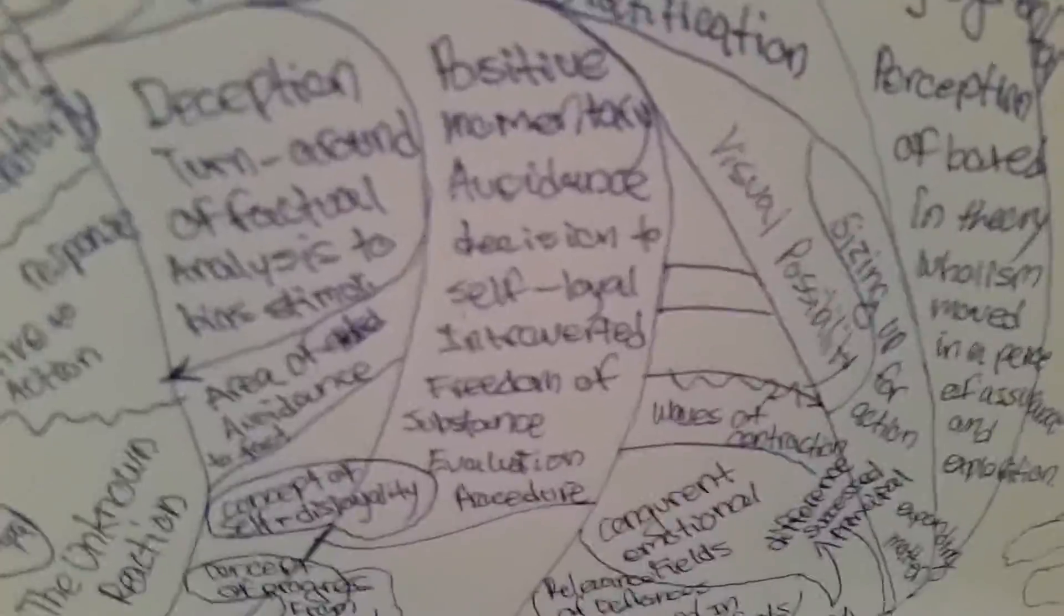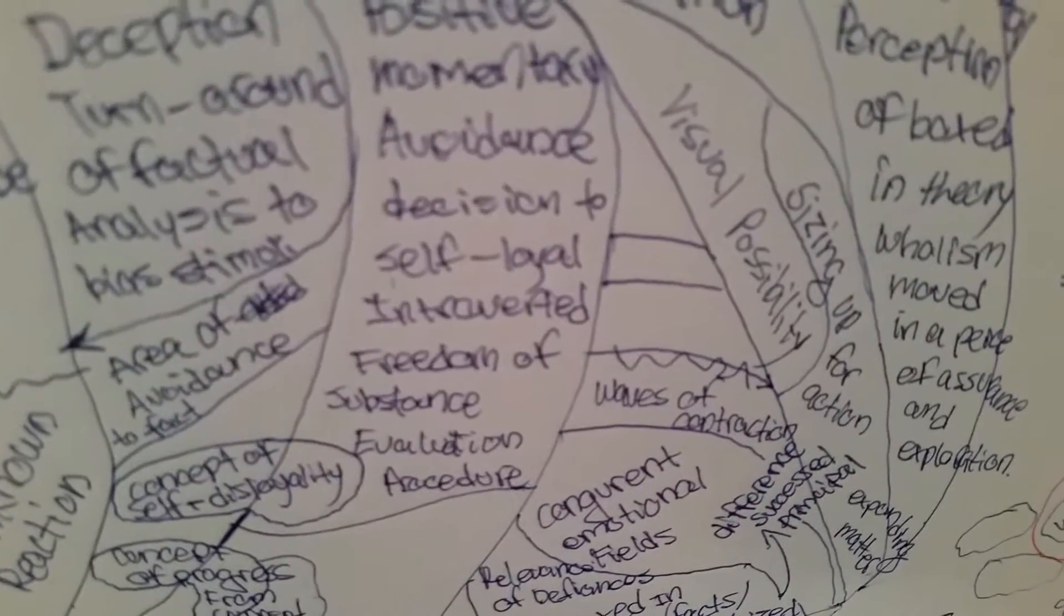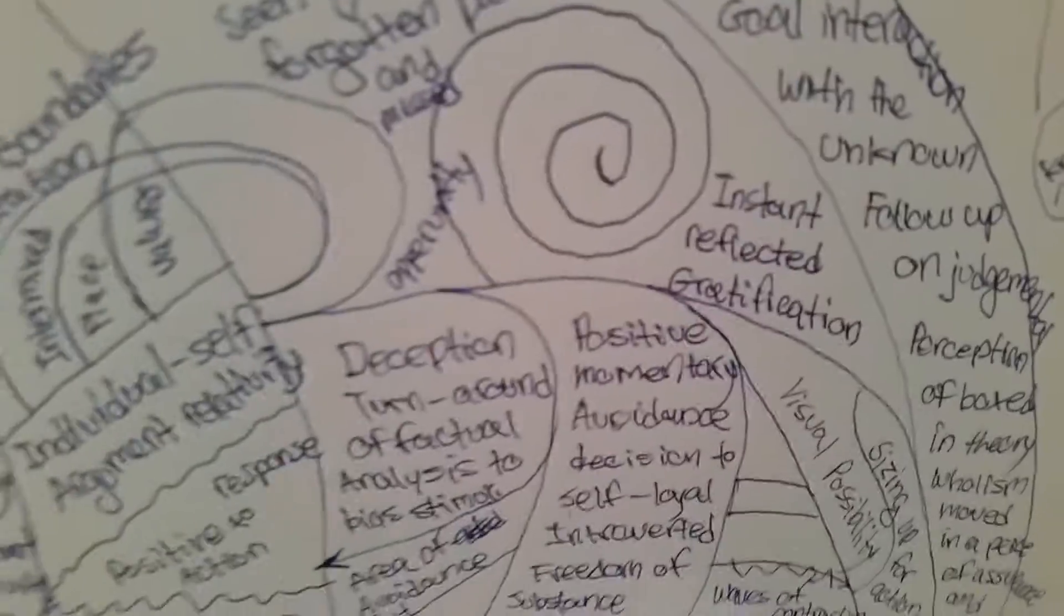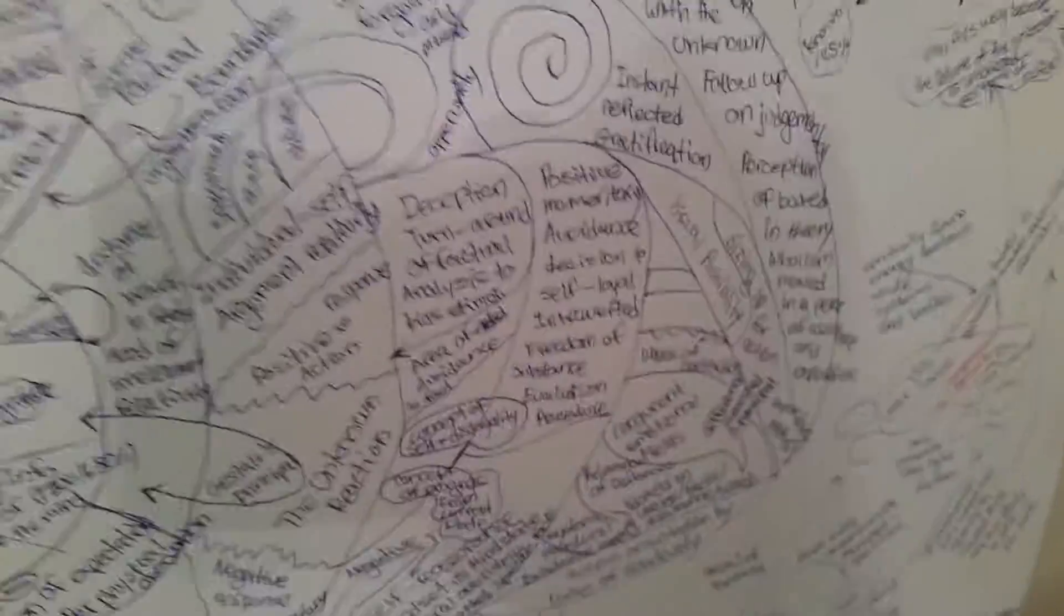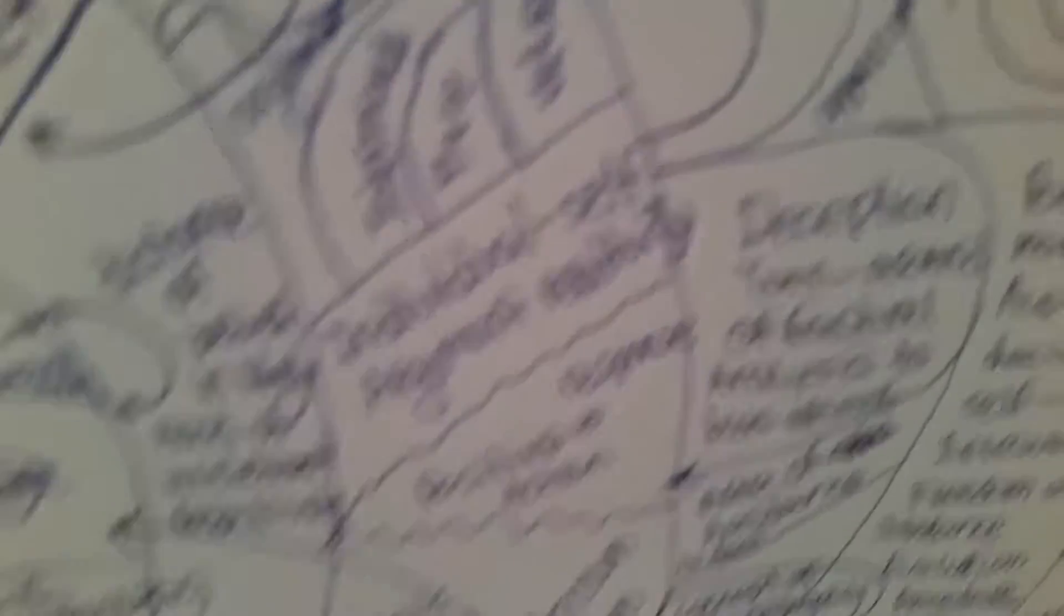Okay, so we discussed a few so you guys get some good ideas, right, for blueprints. You could use these in some way. Okay, positive momentary audience decision to self-loyal, introverted freedom of substance evaluation procedure. Now you see in the system, the longer the square—sorry, the rectangle—the better it will be for you to have this perspective. So we're going to move on to the polarized worlds here.